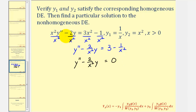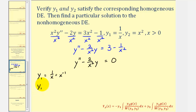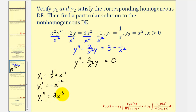Let's first verify that y₁ is a solution to this homogeneous differential equation. If y₁ equals one over x, or x to the power of negative one, then y₁ prime equals negative x to the negative two, and therefore y₁ double prime equals two x to the negative three.